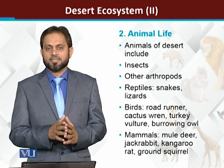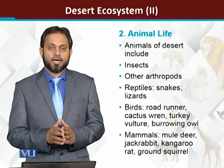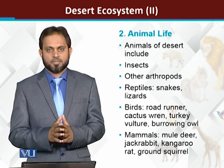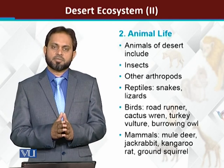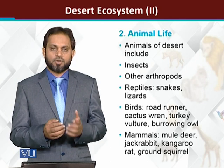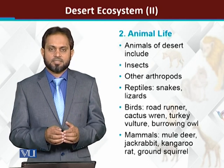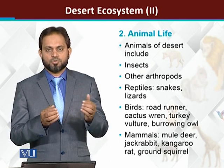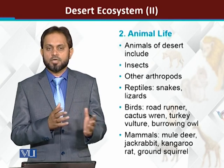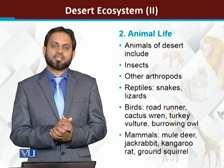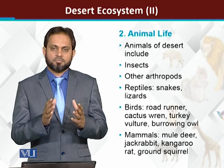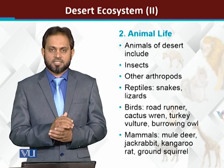Because plant life in the desert ecosystem is very rare, animal diversity is also reduced. In other ecosystems, if we look at grasslands or forests, there is much greater diversity. In deserts, there are very low numbers of species existing.